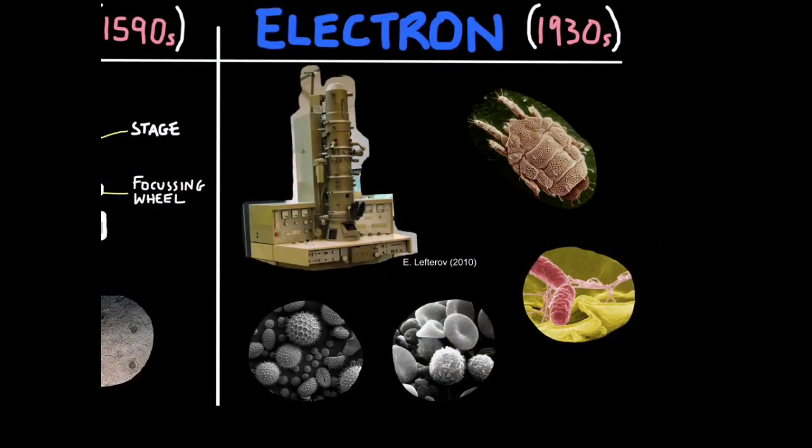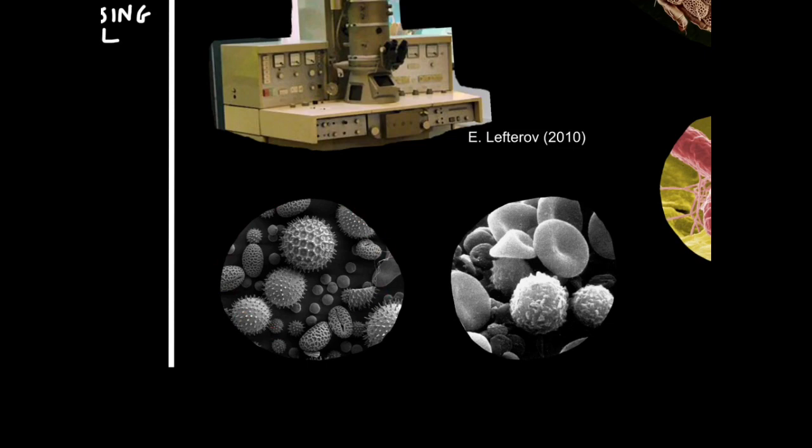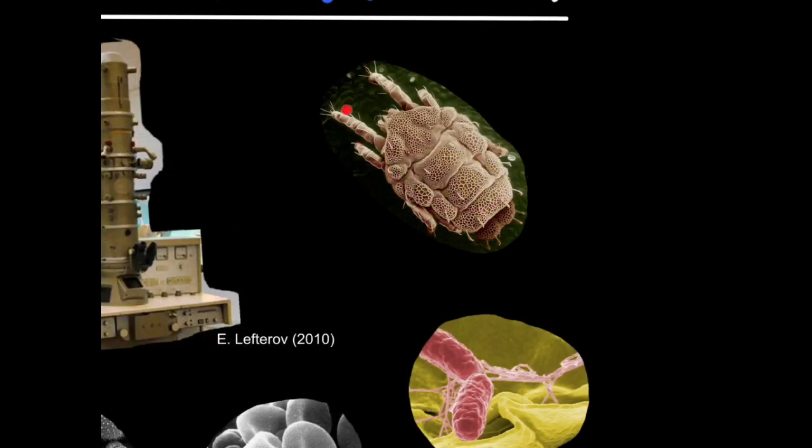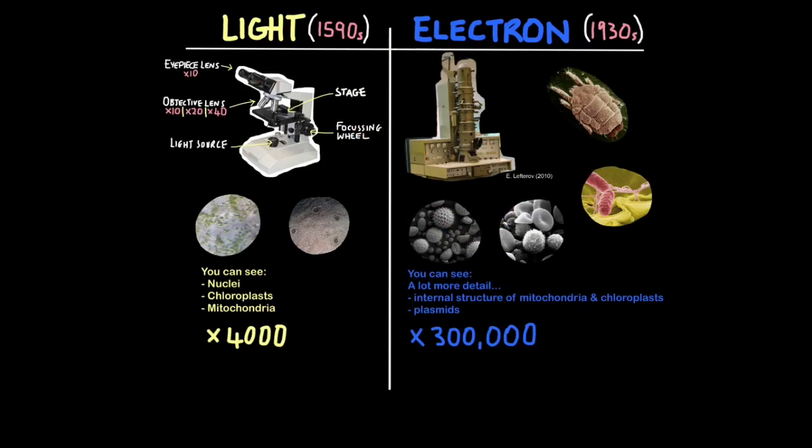An electron microscope is much bigger. It doesn't use light, it actually uses electrons to produce its image. Because electrons are much smaller than the wavelength of visible light, it allows for much higher resolution images to be created. For example, you can see pollen grains here. You can see red blood cells and white blood cells here. This is an artificially colored image of salmonella bacteria that gives you food poisoning. And this is a tiny mite, which has been magnified significantly. Both microscopes have helped us develop the field of cellular biology. They've enabled us to see structures we never knew existed and help develop our understanding of how cells work. With light microscopes, you can see things like nuclei, chloroplasts, and mitochondria. And they can magnify images up to 4,000 times. Electron microscopes, you can see images in much more detail. You can see the internal structure of mitochondria and chloroplasts. And you can also see plasmids. So without electron microscopes, genetic engineering would still be in the dark ages. They can magnify images by 300,000 times. Make sure you know the different things you can see through each type of microscope.